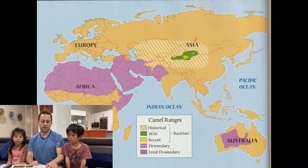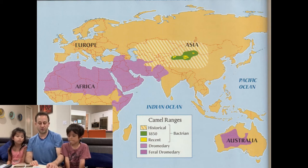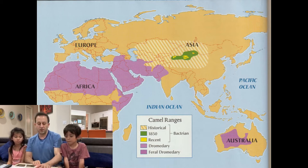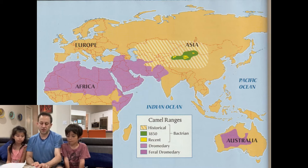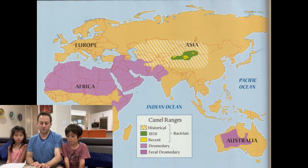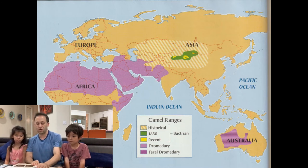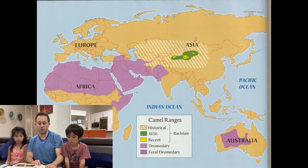Dromedaries are in Arabia and the north of Africa, and some in Persia and Pakistan as well. Meanwhile, Bactrian camels are in Central Asia — the Xinjiang area of China, Mongolia. Their habitat has shrunk a lot, which is why most of the camels now are dromedaries.